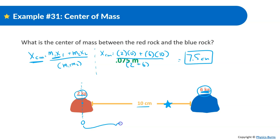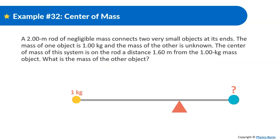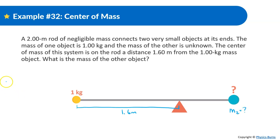Next problem: a two-meter rod of negligible mass connects two small objects. One object has a mass of 1 kilogram, the other is unknown. The center of mass of the system is on the rod, 1.6 meters from the 1-kilogram mass. What is the mass of the other object? We'll use the same formula: center of mass = (m1·x1 + m2·x2) / (m1 + m2).